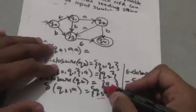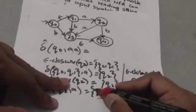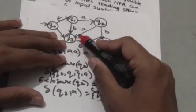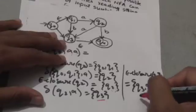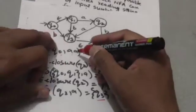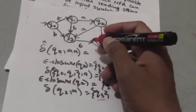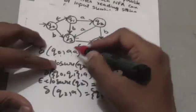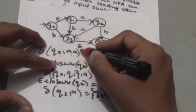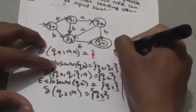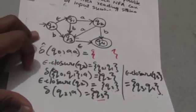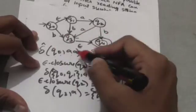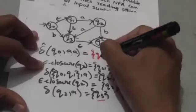Now we have to find the empty closure of state Q3. The empty closure of state Q3 will have two states: Q3 and Q4. Now we have read the whole string and there are no more symbols left to apply. The output of the extended transition function in this case will be a set of two states: Q3 and Q4.